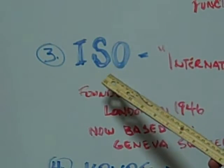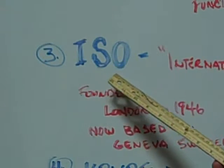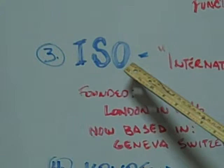ISO is the UN of standards for the lighting industry. ANSI is the United States member of the ISO, which is the International Standards Organization. It's non-governmental, and it has 162 national standards bodies in its membership.